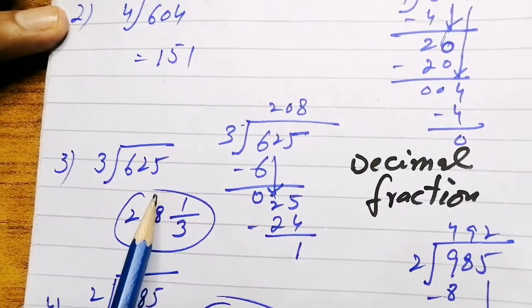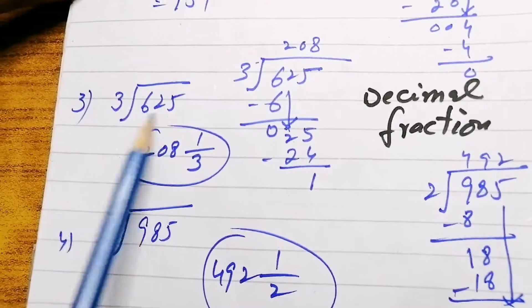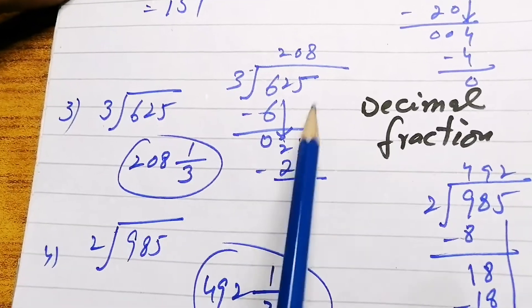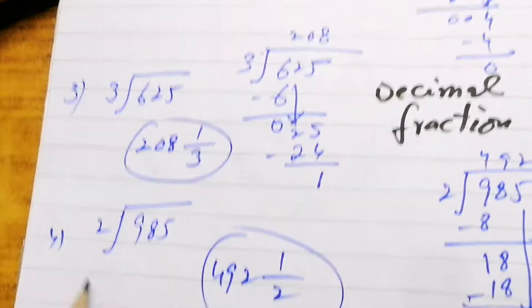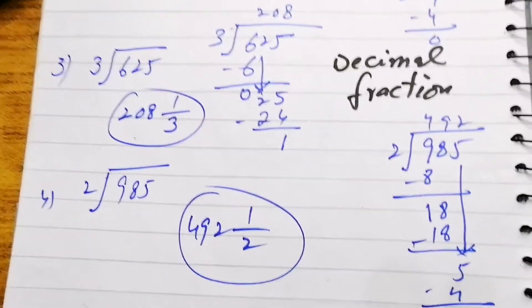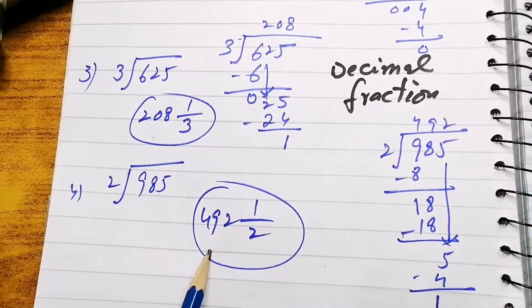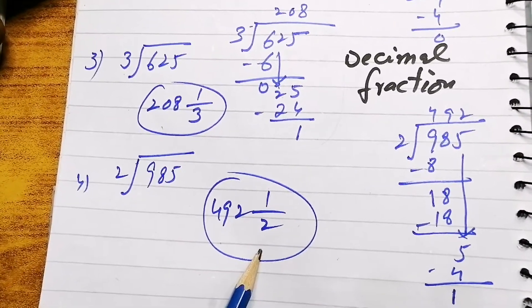Similarly you can see I have done 625 by 3. Here the answer is in whole numbers. Then next is 985 divided by 2, which is 492 and 1 over 2. The answer is in whole numbers.